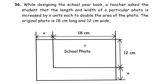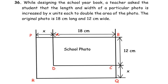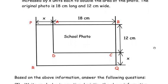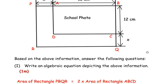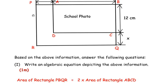The dimensions — the length and width — were increased by x units each to double the area of the photo. Let us first label the given figure. The small rectangle is labeled as ABCD and the extended area is labeled as PBQR. Since the first question asks us to form an equation between the two areas, we can write: area of rectangle PBQR equals two times the area of rectangle ABCD.